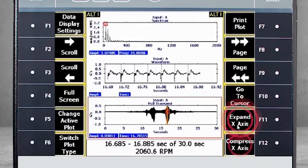F11 and F12 expand and compress the horizontal axis, allowing you to essentially zoom in or out on data in your active plot.